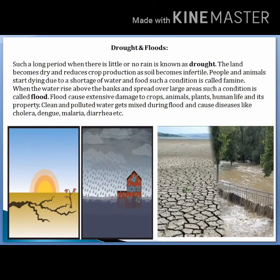Floods and drought: a long period when there is little rain is known as drought. In deserts, the heat dries up water. This leads to poverty because of shortage of food and water, and people and animals start to die. This condition is called famine.